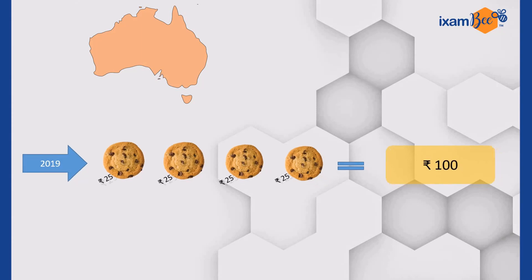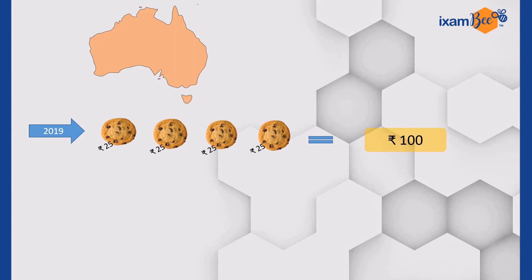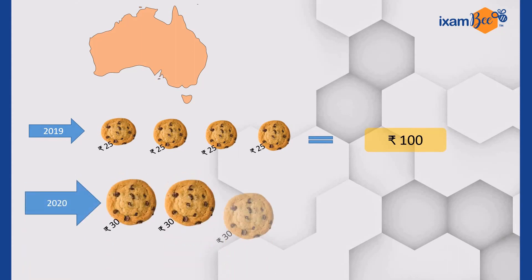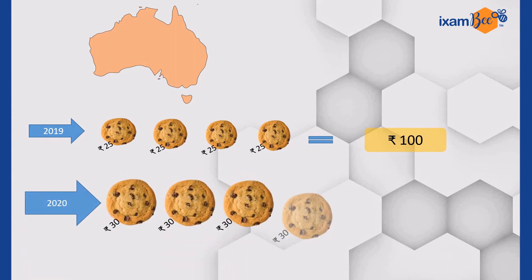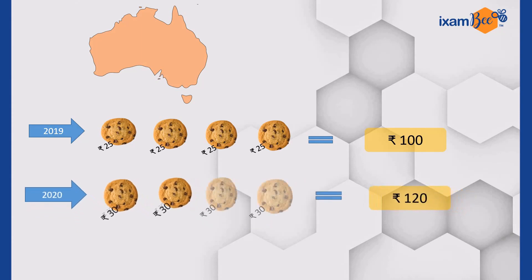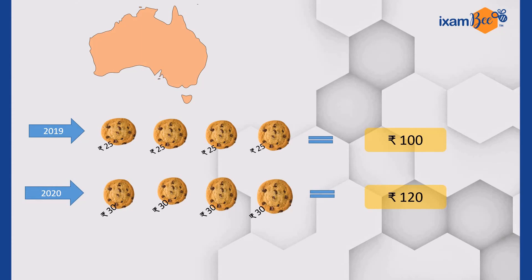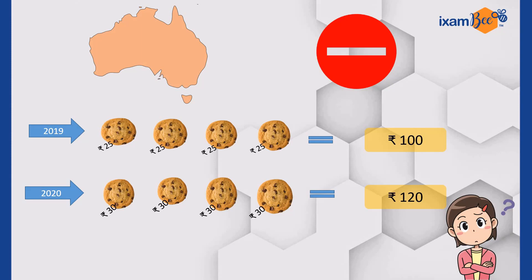Now in 2020, Australia produced the same four cookies; however, the market price increased from 25 to 30 rupees. So the total GDP would logically be 30 × 4 = 120 rupees. So can we say that Australia's GDP increased by 20 percent between 2019 and 2020? The short answer is no.